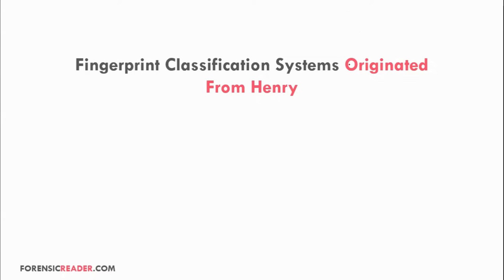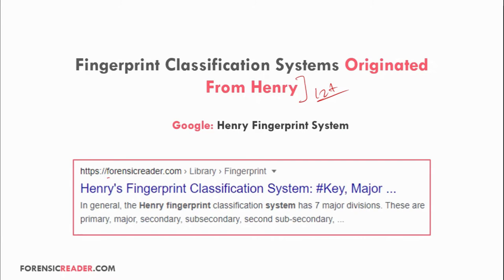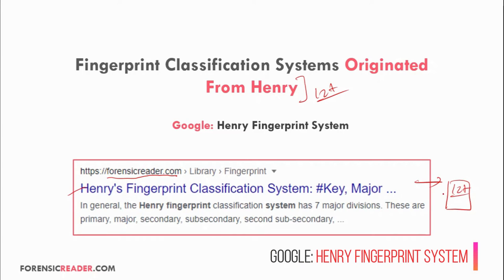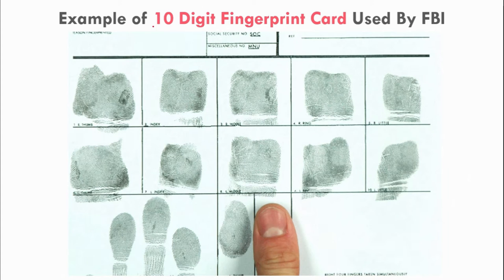There are 12-plus fingerprint classification systems currently used by various federal agencies for personal identification. To find the full list, search for 'Henry classification system' or 'Henry fingerprint system' on Google, and you will find the ForensicReader.com website. There is a table listing all 12-plus countries and their federal agencies using the Henry classification system. The 10-digit FBI fingerprint card is the same card used by various federal agencies for recording fingerprints.